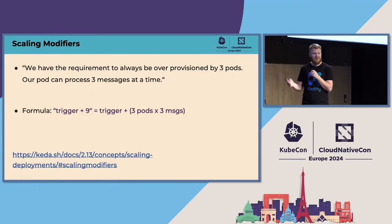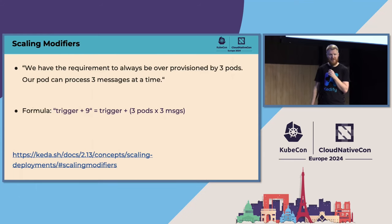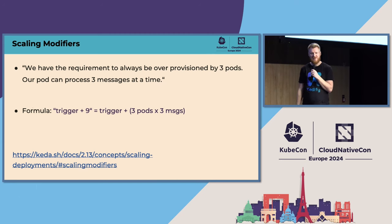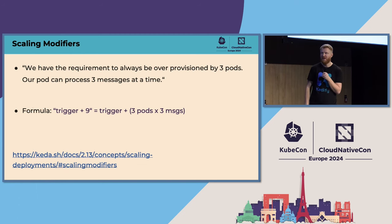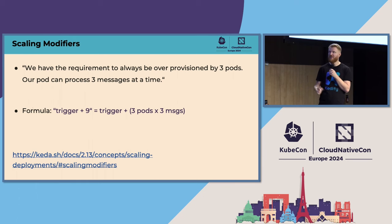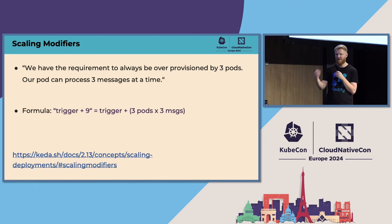Here's a real use case from a user: 'We have the requirement to always be over-provisioned by three pods. Our pods can process three messages at a time.' This is great for Scaling Modifiers. You can say the trigger value plus nine — nine because three pods times three messages. KEDA will always report that extra number of replicas based on the scaling modifier formula.